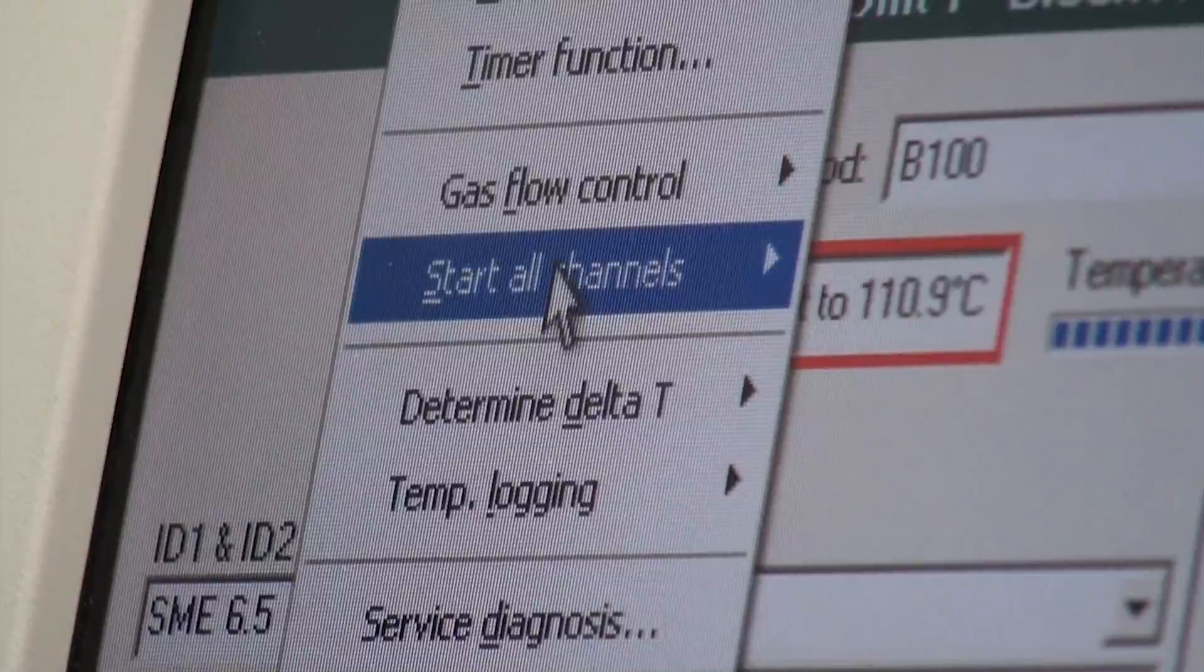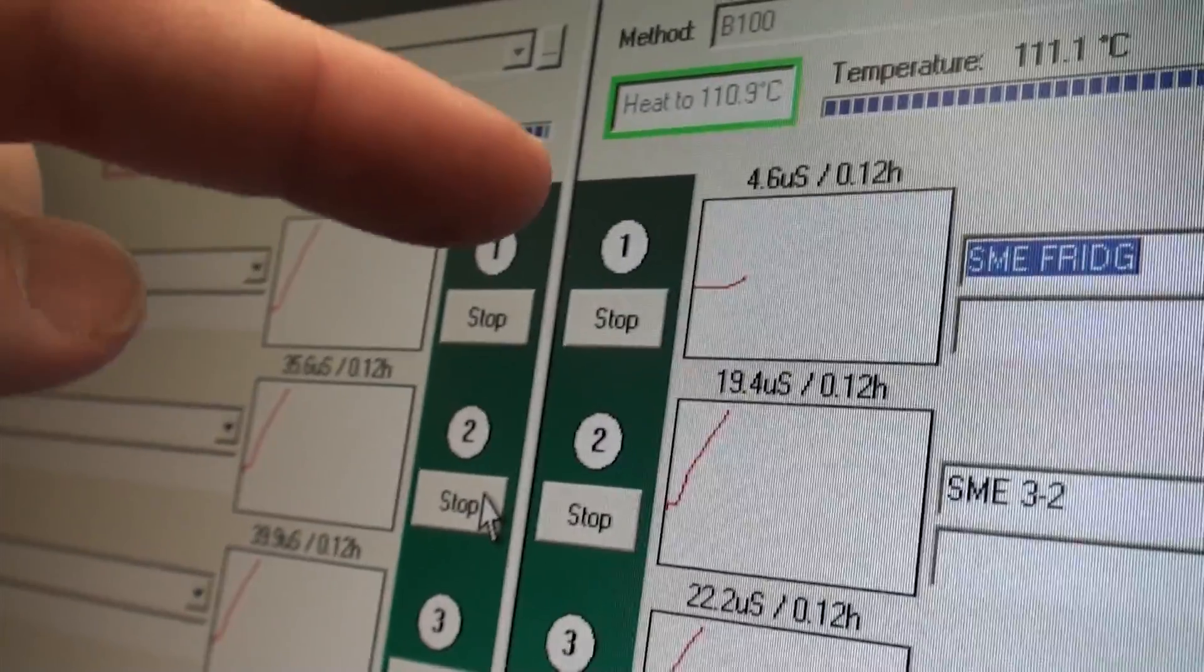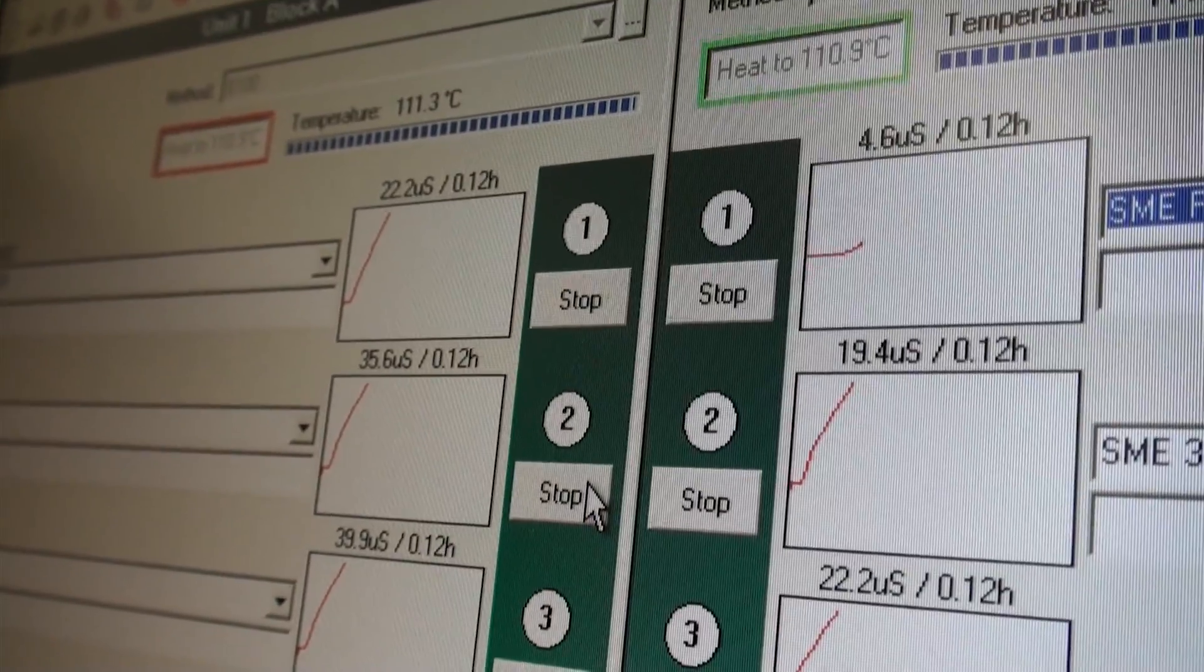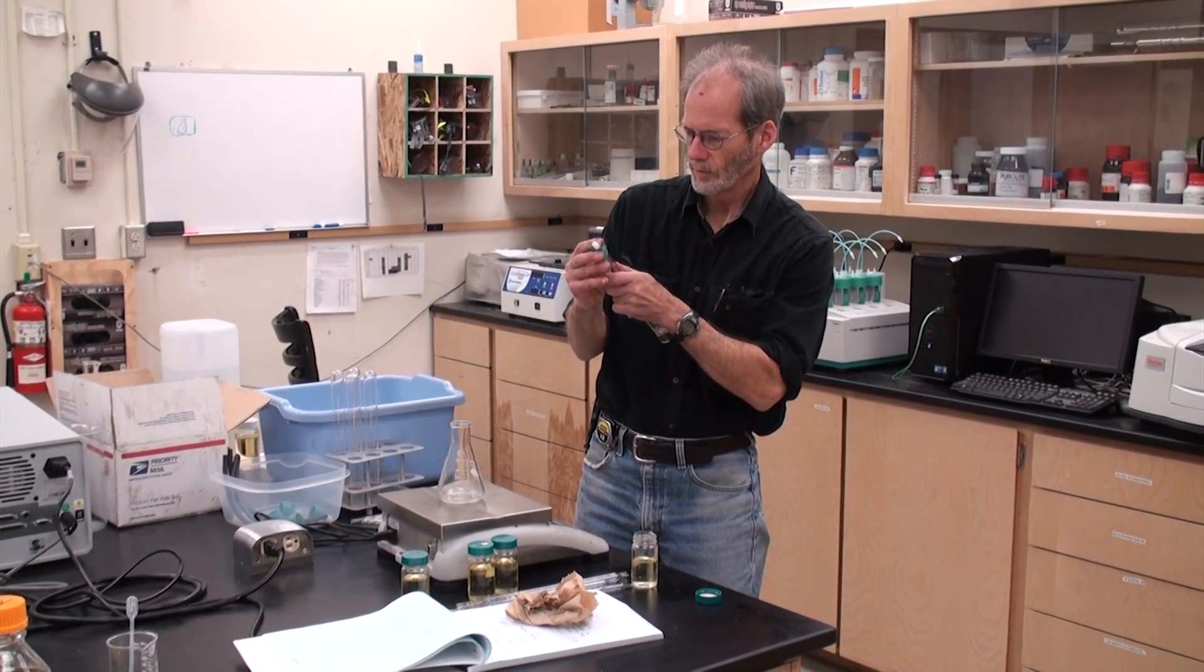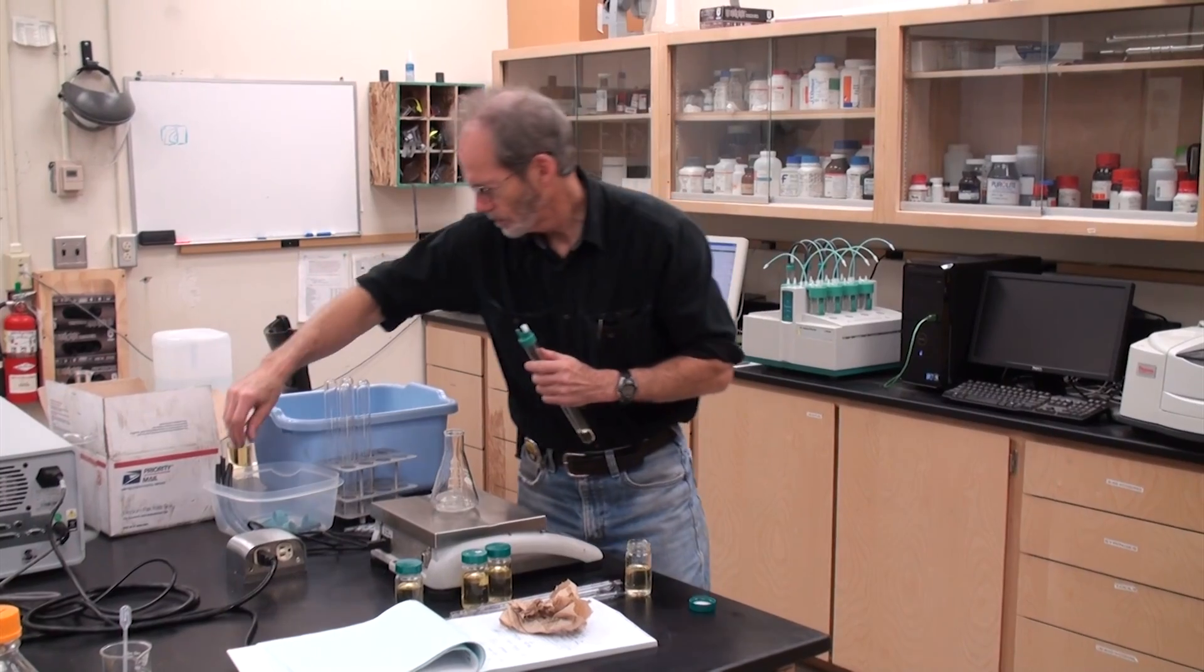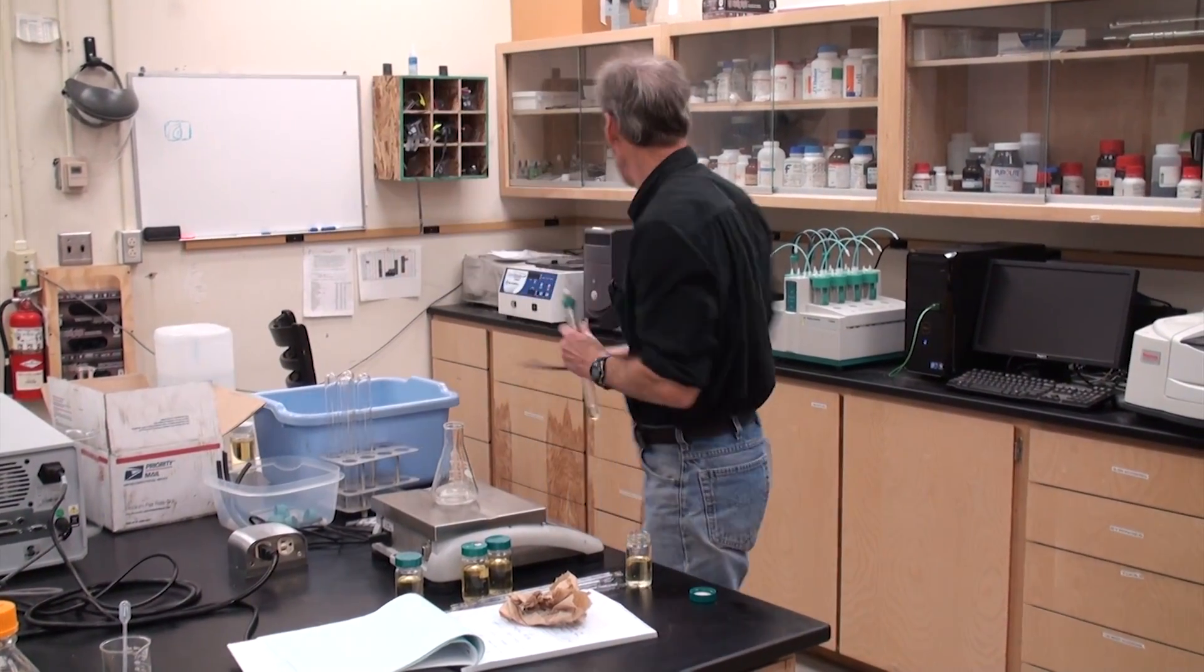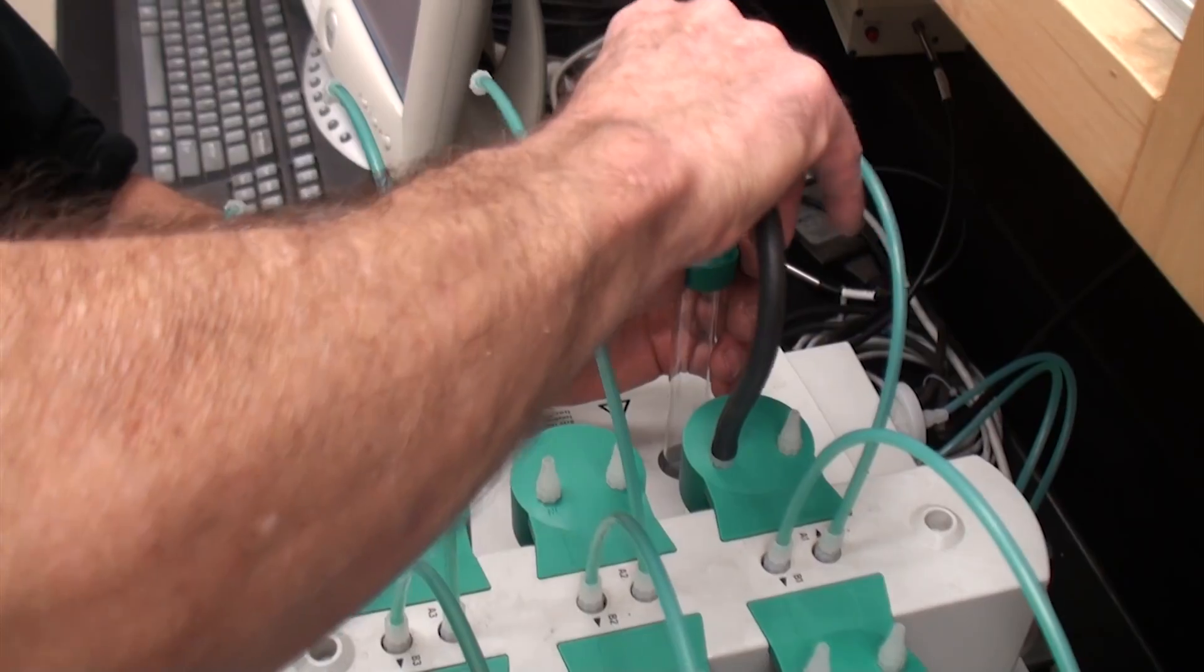One of the specs for biodiesel is oxidative stability index. The U.S. spec is three hours. So the sample needs to sit in there for three hours at that temperature with air being blown through it and still maintain its integrity.